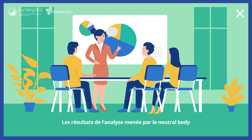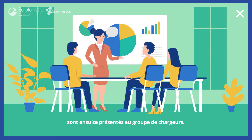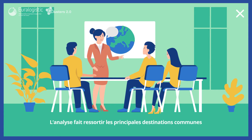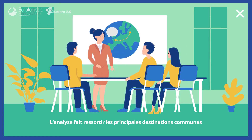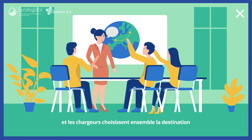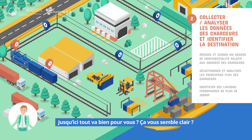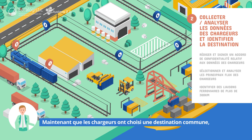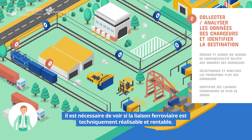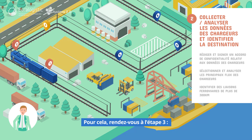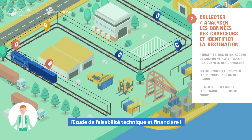Les résultats de l'analyse menée par le neutral body sont ensuite présentés au groupe de chargeurs. L'analyse fait ressortir les principales destinations communes, et les chargeurs choisissent ensemble la destination retenue pour la massification de leurs flux. Maintenant que les chargeurs ont choisi une destination commune, il est nécessaire de voir si la liaison ferroviaire est techniquement réalisable et rentable. Rendez-vous à l'étape 3 : l'étude de faisabilité technique et financière.